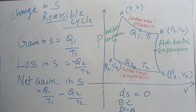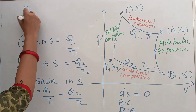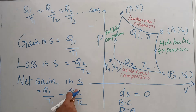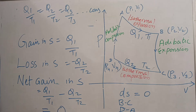In the last video, we have seen that Q1/T1 = Q2/T2, meaning Q/T is a constant quantity. Therefore, Q1/T1 minus Q2/T2 equals zero. So for a completely reversible cycle, the change in entropy is zero.